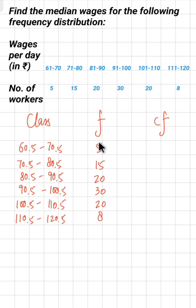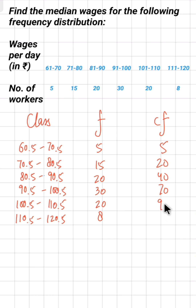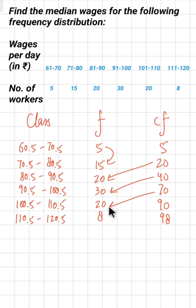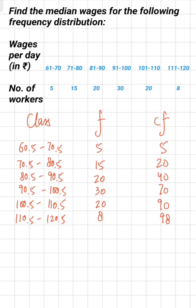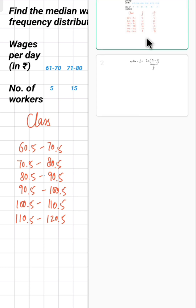The frequencies are 5, 15, 20, 30, 20, and 8. To find the cumulative frequency, add the frequencies progressively: the first CF is 5, then 5 plus 15 is 20, then 20 plus 20 is 40, then 40 plus 30 is 70, then 70 plus 20 is 90, and finally 90 plus 8 is 98.